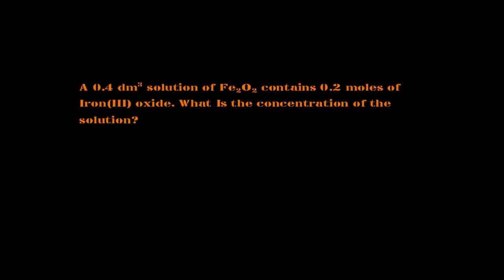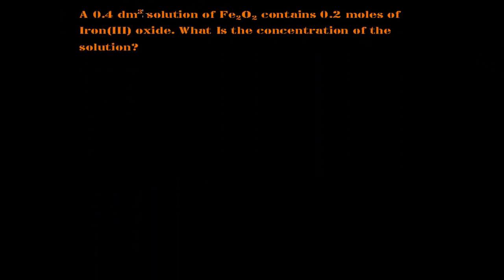Let's move on to the next one. A 0.4 dm³ solution of Fe₂O₃ contains 0.2 moles of iron oxide. What is the concentration of the solution? In this question we've been given the volume in dm³ and the number of moles.